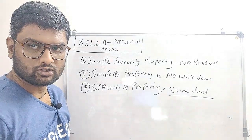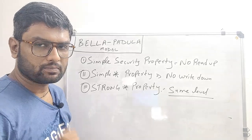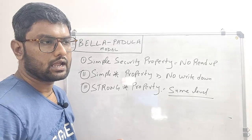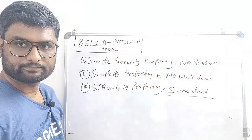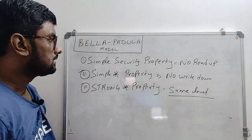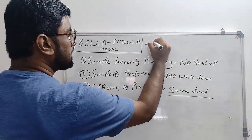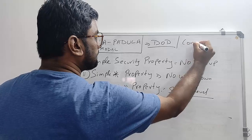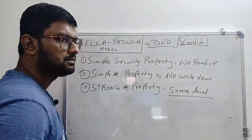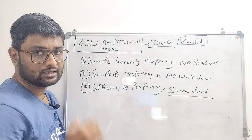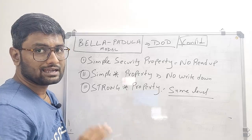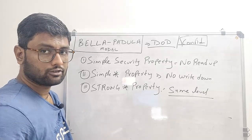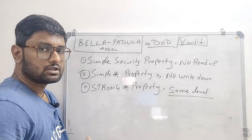Hello team, welcome to my session. Today we're going to discuss a security model, a topic from CISSP Domain 3. The model is called the Bell-LaPadula model. This model was developed for the Department of Defense and primarily focuses on confidentiality only — meaning protection against unauthorized disclosure of data. It is the first classification model in CISSP that focuses on confidentiality and was introduced specifically for the Department of Defense.